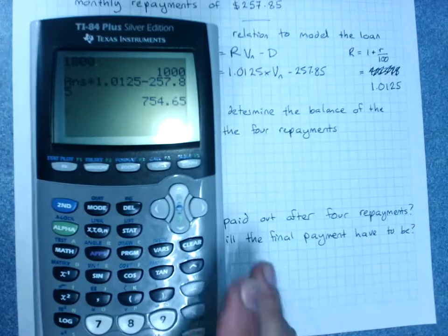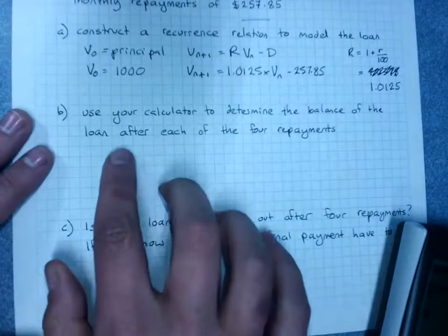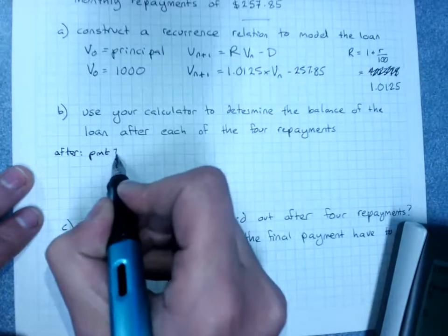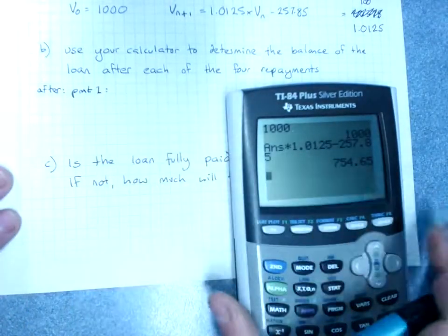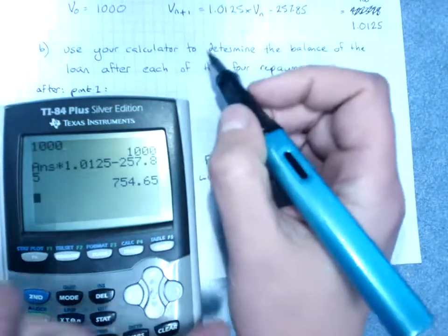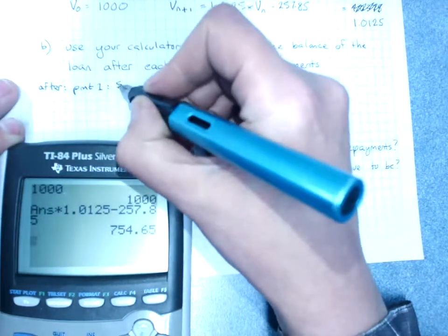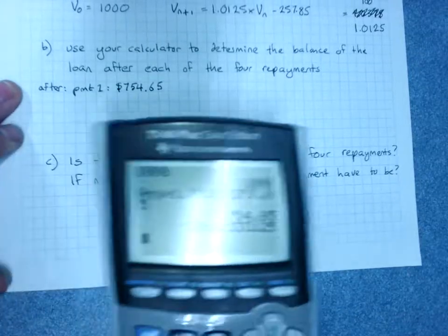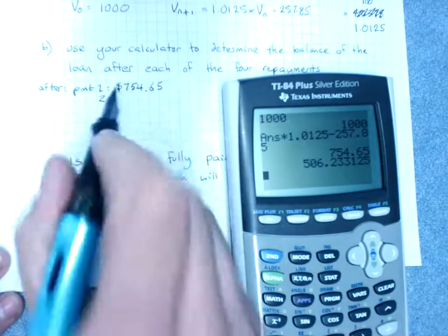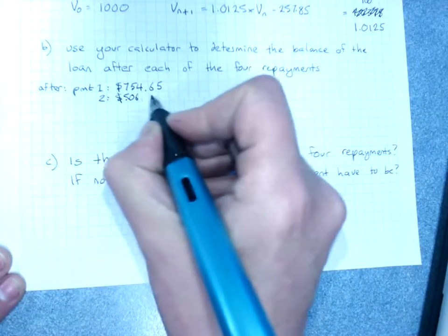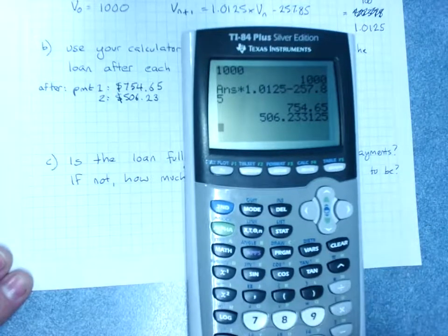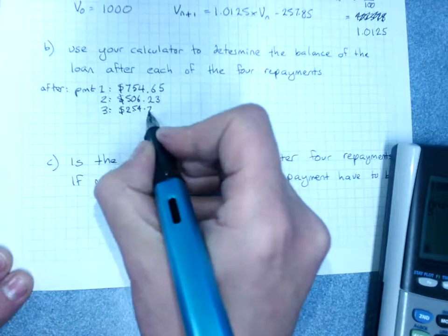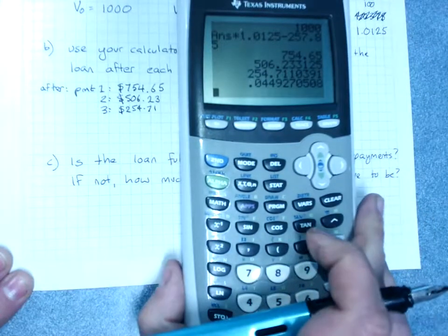After repayment one the value is $754.65. Hit enter again for repayment two, always rounding to two decimal places because it's money. Hit enter for the value after repayment three. Hit enter again — and after repayment four there are four cents left over.